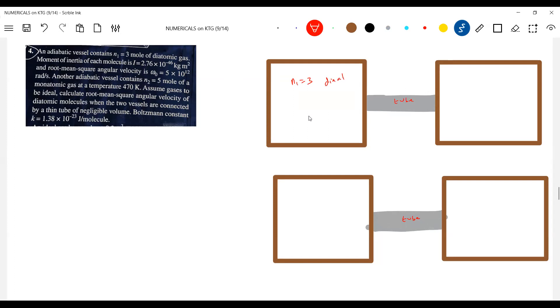I'll write diatomic. One vessel contains five moles of monatomic gas. This is the information we have. The temperature T2 is 470 Kelvin, we don't know this temperature.